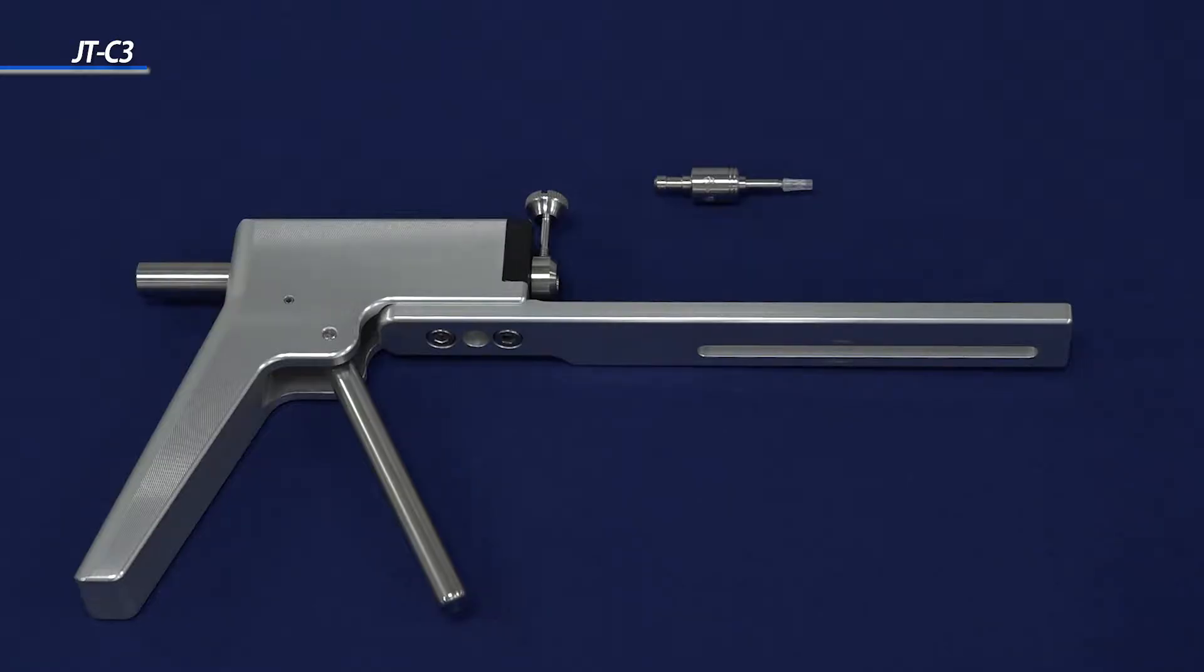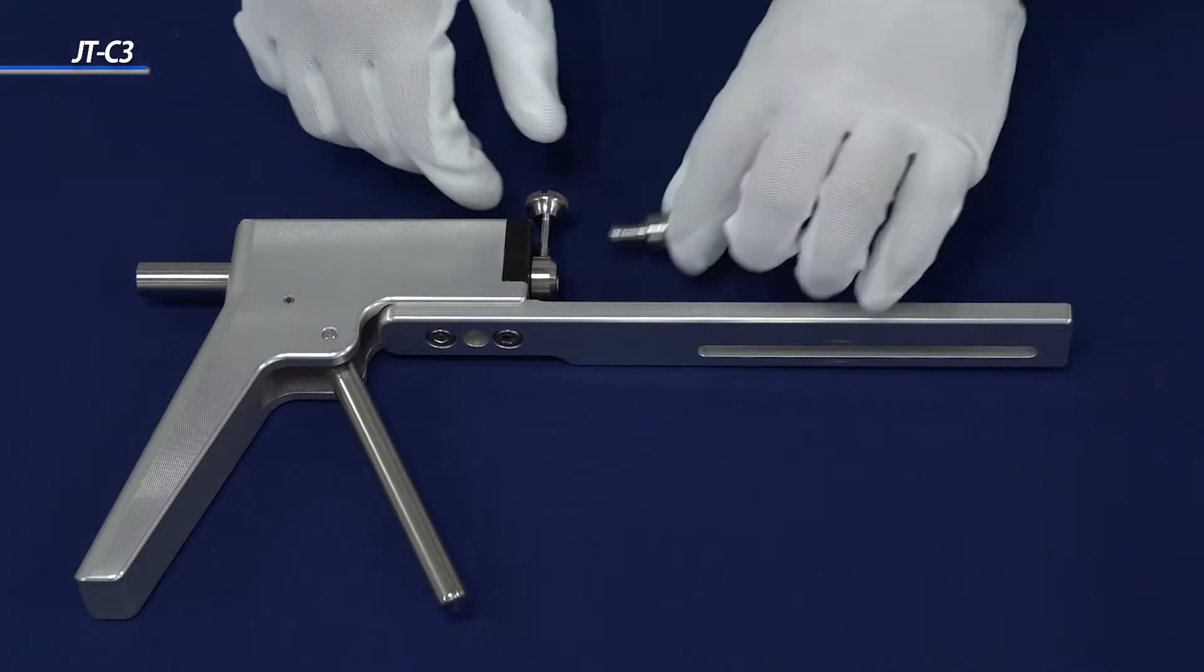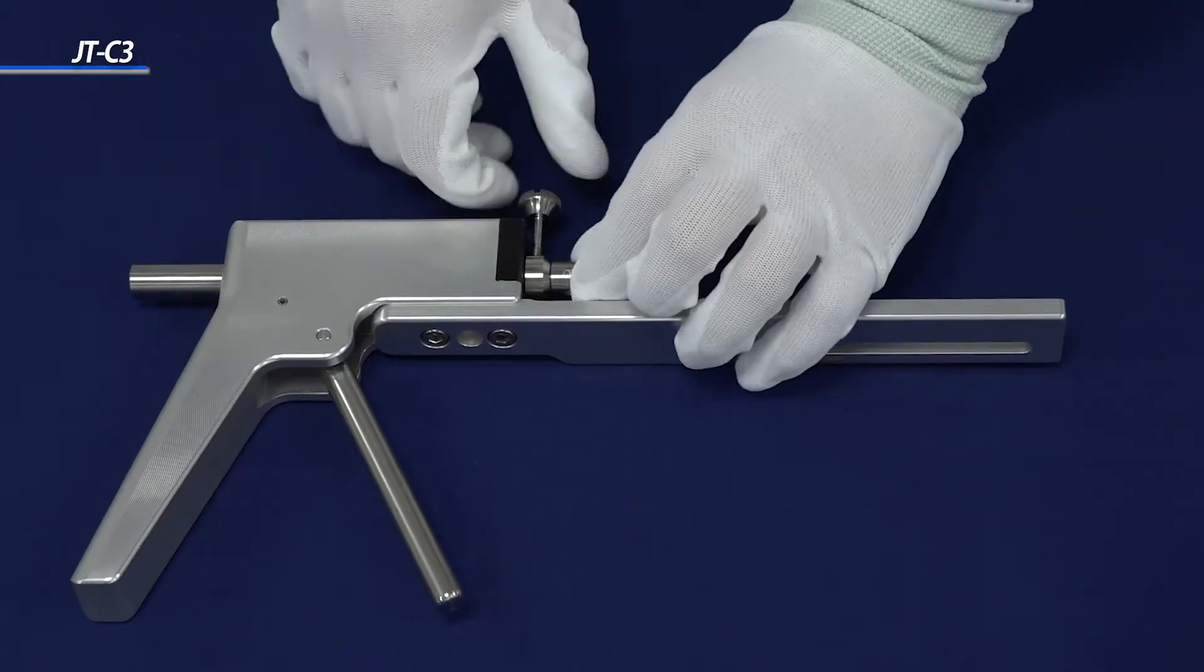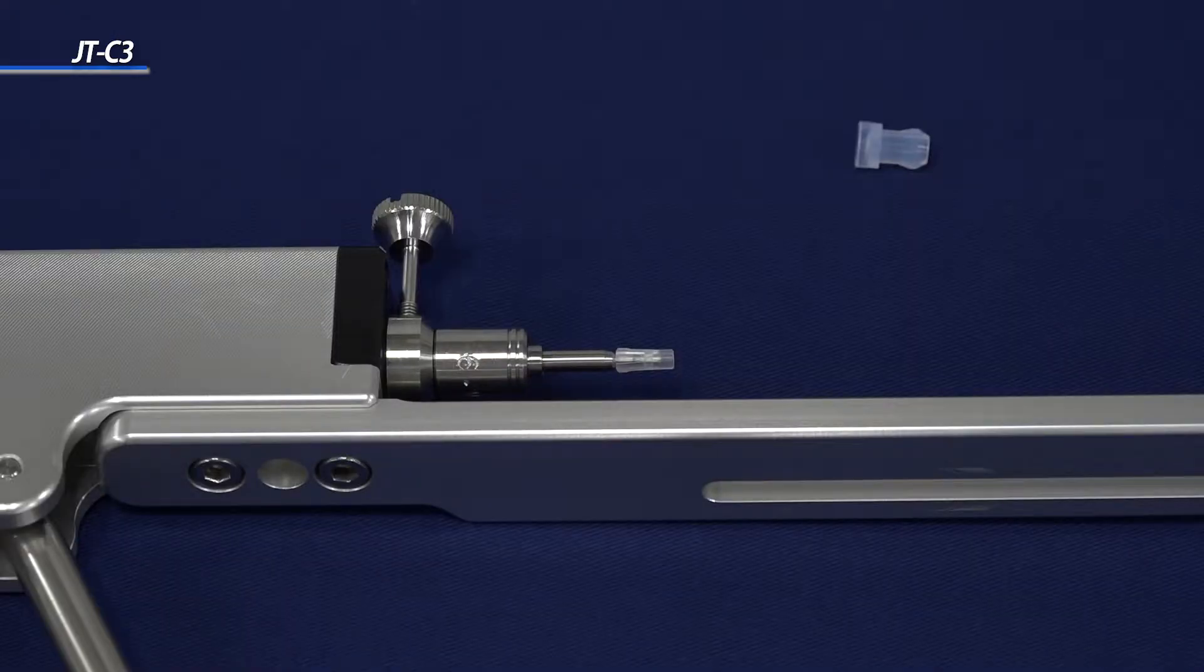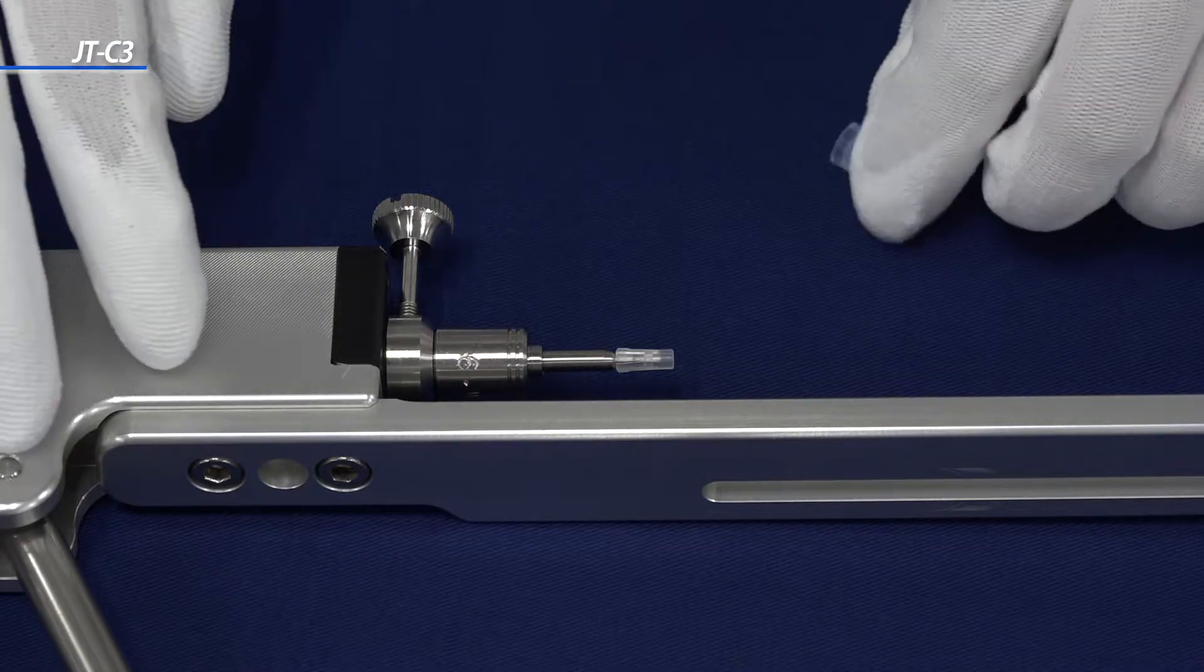Now we will explain how to assemble the Super 300 Type Pillar Fitting. First, attach the sleeve holder to the insertion tool. Next, place the sleeve over the sleeve holder. Check to make sure that the sleeve is firmly in place.